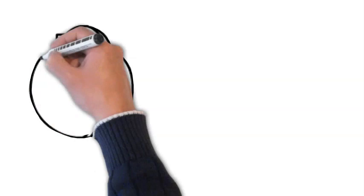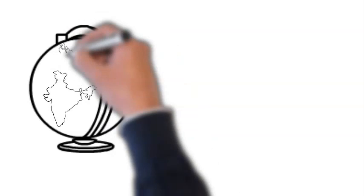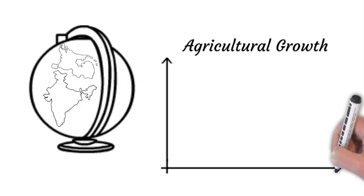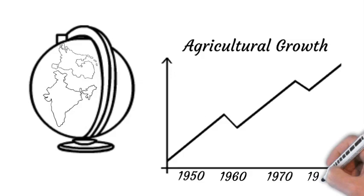Did you know that the green revolution had effects and consequences spanning the entire globe? With an increase in agricultural trade of about 4.3 percent a year between the years of 1960 to 1980, the green revolution allowed for an increase in agricultural production in any country that employed it.